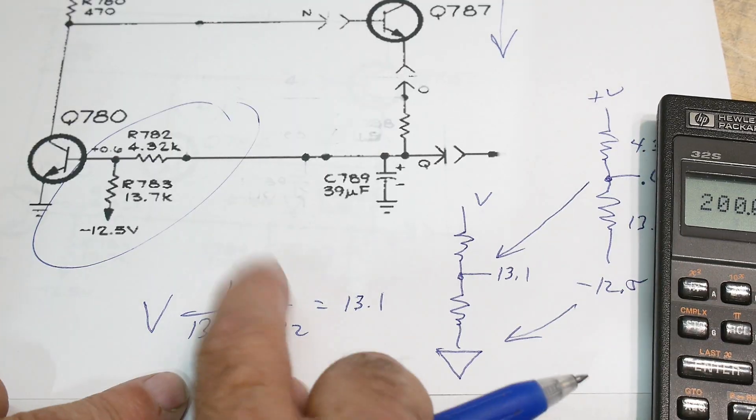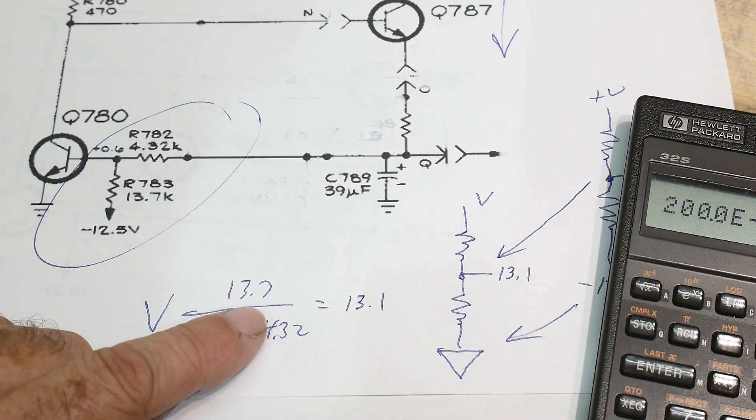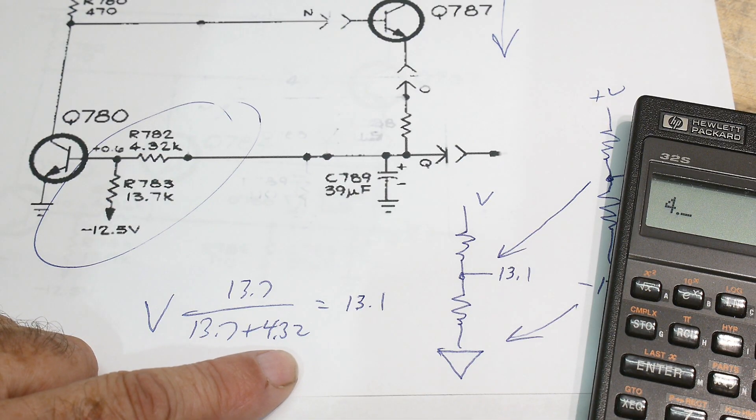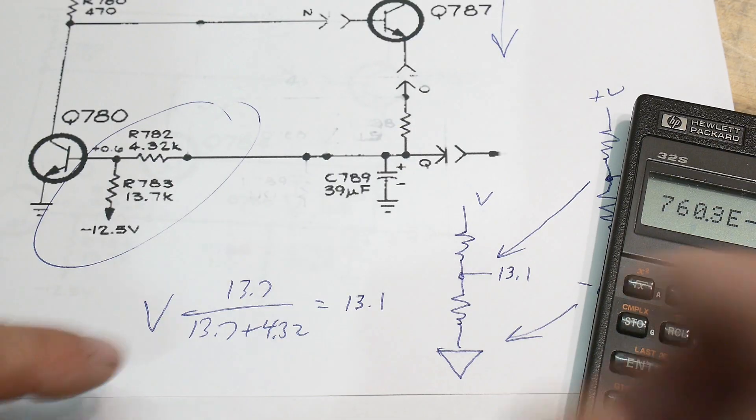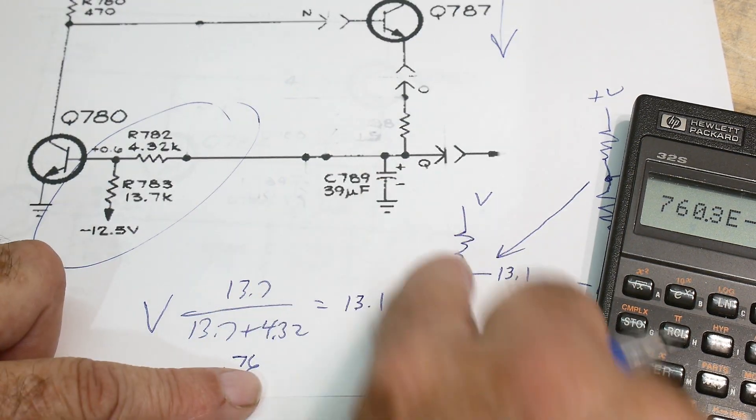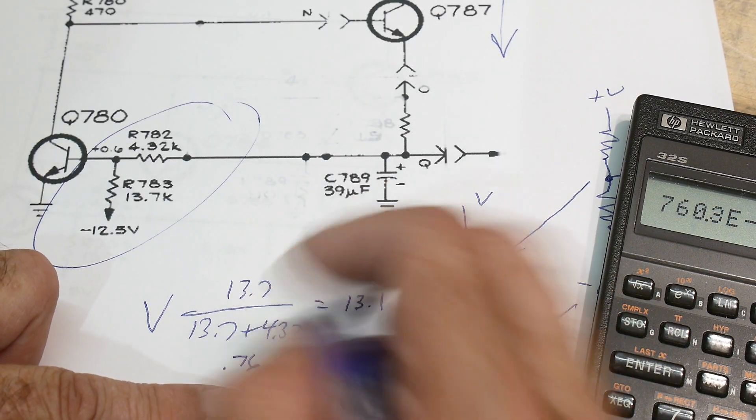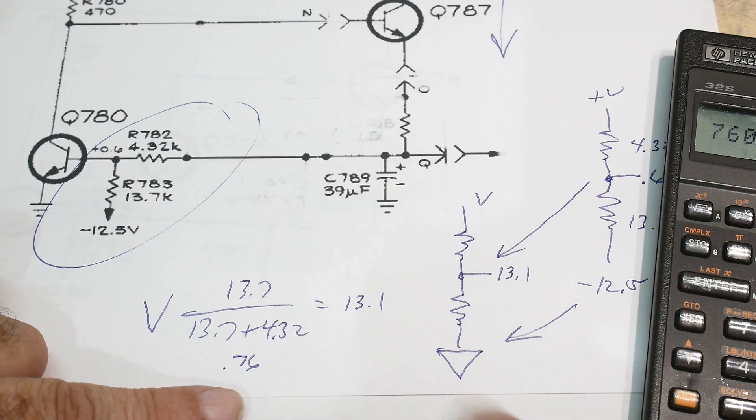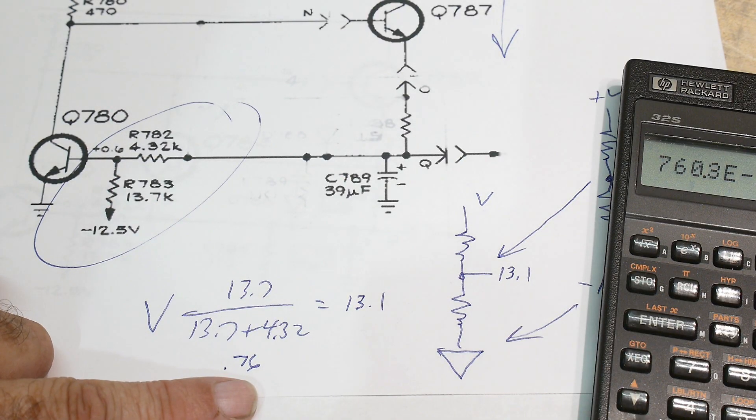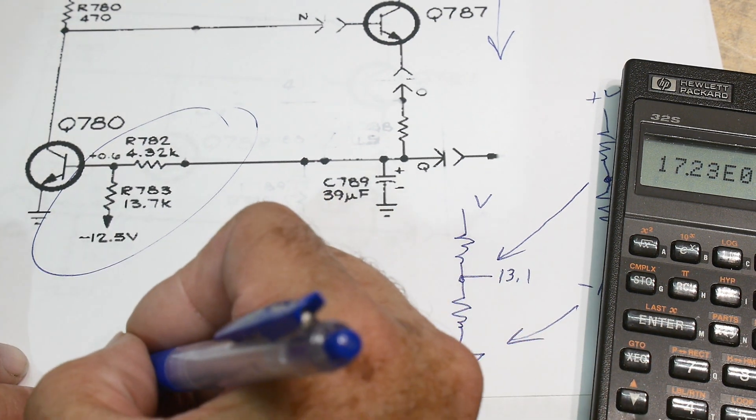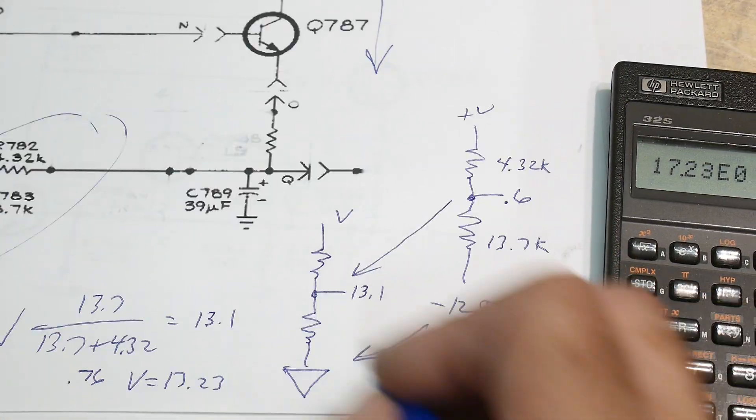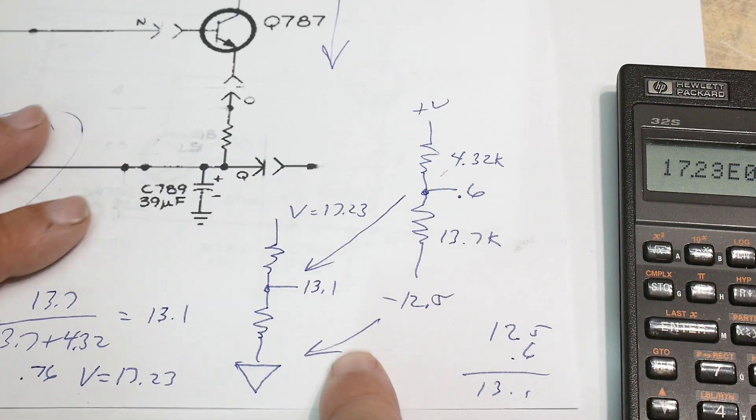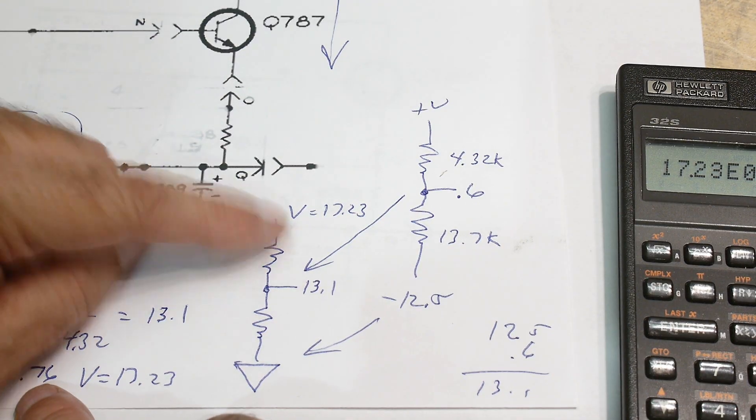We don't need to put in the K's here - the ratio is going to be the same. So we'll have 13.7 and 4.32. Add those, divide those. Our ratio is 0.76, so we're going to have 76% of whatever V is - 0.76V. If we want to know what V is, then we take 13.1 and divide it by 0.76. We get V equals 17.23. So this would be 17.23, and that would solve this equation. 17.23 times 0.76 gives us 13.1.